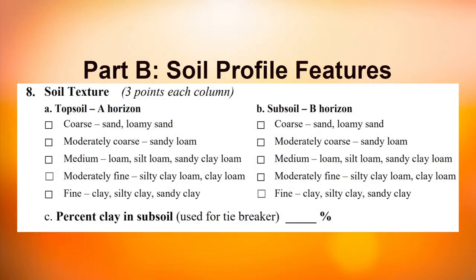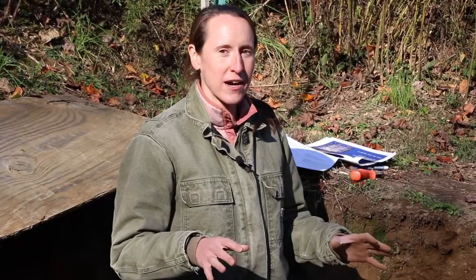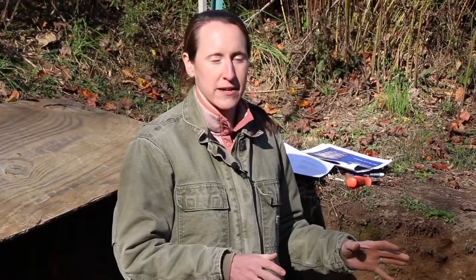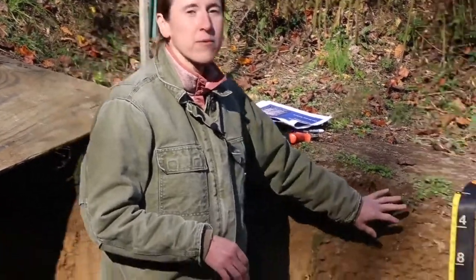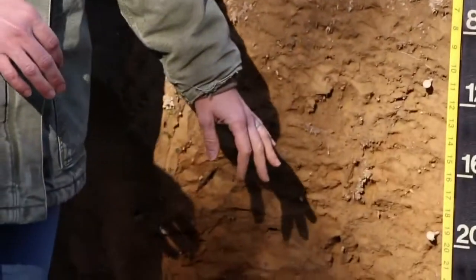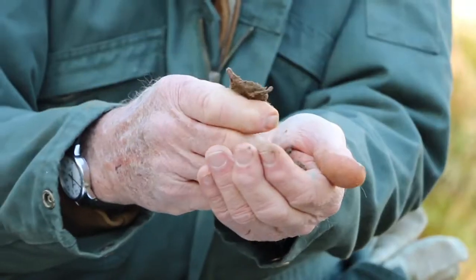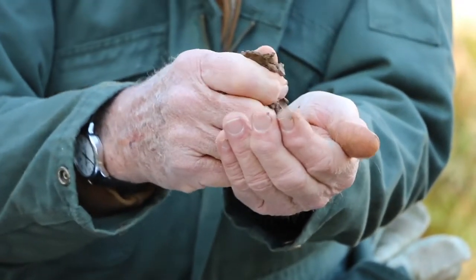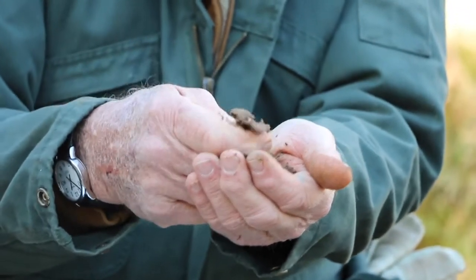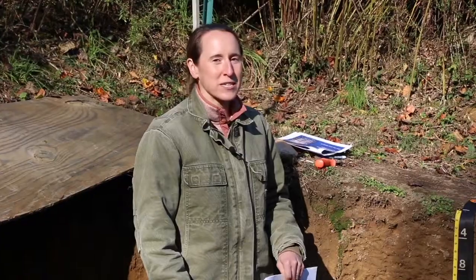Question eight is soil texture, and we also have percent clay as a tiebreaker. For the contest, two samples will be pulled outside the pit — one from the topsoil and one from the subsoil — and you'll estimate soil texture on both. You'll use the ribbon method to determine texture, and there is another video available showing how to estimate soil texture.